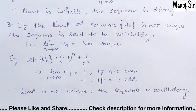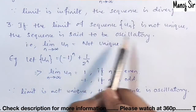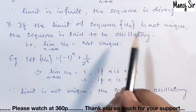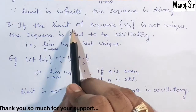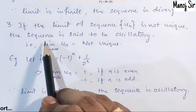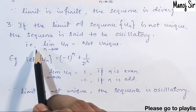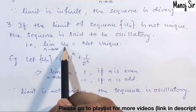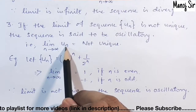Now the last and very important point: if the limit of a sequence UN is not unique, then the sequence is said to be oscillatory. That is, limit as N tends to infinity of UN is not unique — you will not get a single unique value.